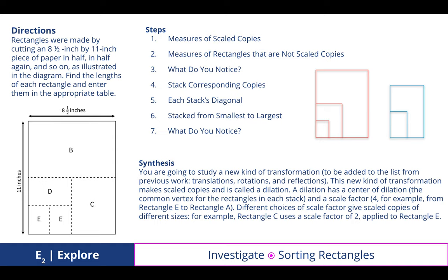To synthesize, you are going to study a new kind of transformation to be added to the list from previous work: translations, rotations, and reflections. This new kind of transformation makes scaled copies and is called a dilation. A dilation has a center of dilation, the common vertex for the rectangles in each stack, and a scale factor. For example, rectangle C uses a scale factor of 2 applied to rectangle E.